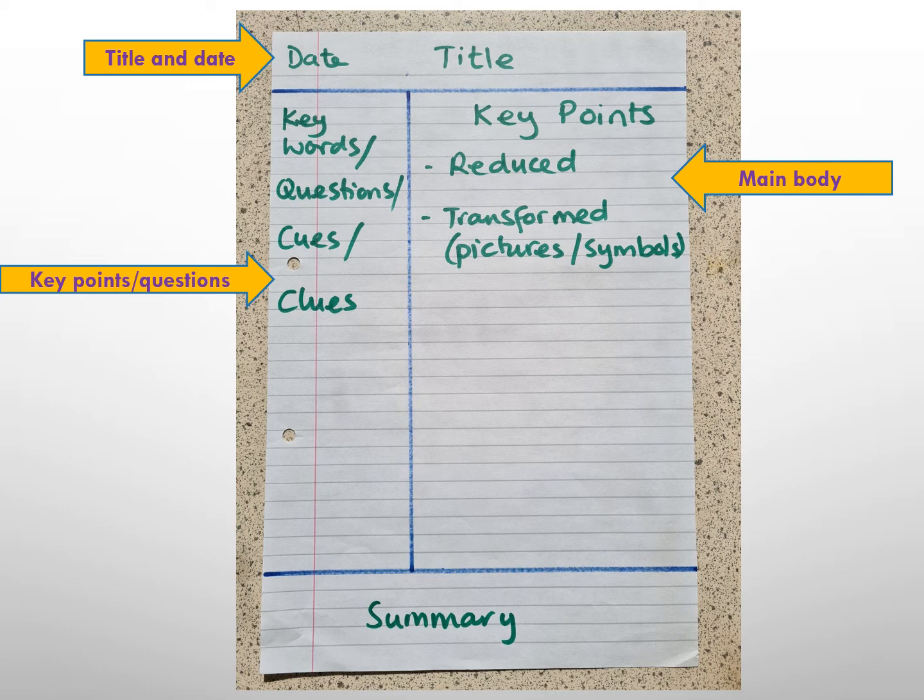The key bit is the margin on the left of the main body of the Cornell notes. This section is where you will categorize and connect your key points into keywords or clues or questions to help you remember the detail in the key points.